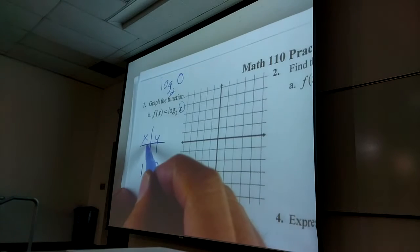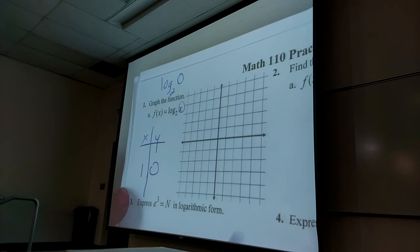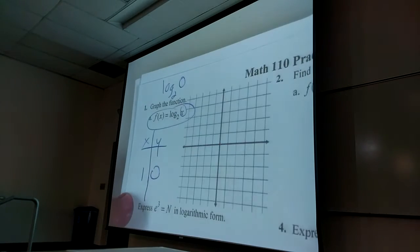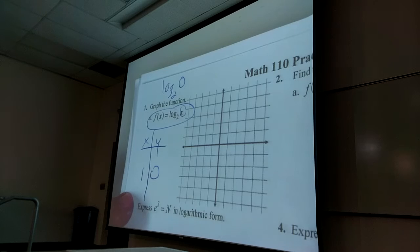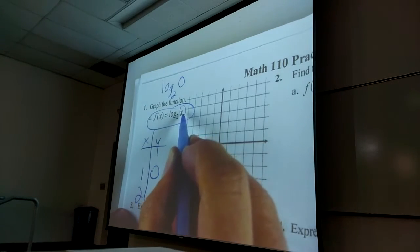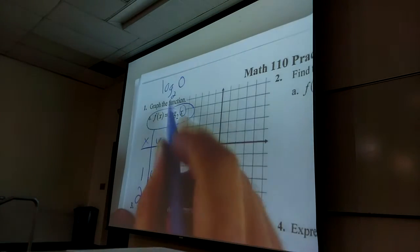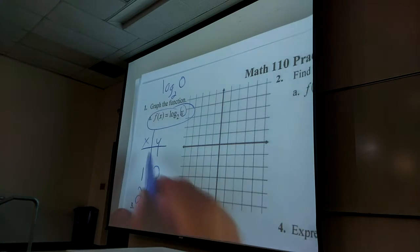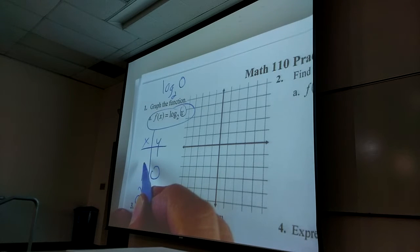The other smart things to put in for x have to be based on the base of the function — two. For example, two to the first is two. So I want to put a two in. What's log base two of two? Log base two of two is one, because it takes one two to make two. What's something below one that would be a smart input? Not zero — we just covered that.